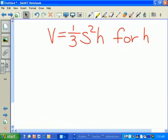The final one on literal equations: V equals one-third S squared H for H. We want to get H by itself, so we need to find a way to get rid of one-third.